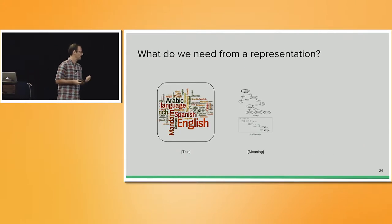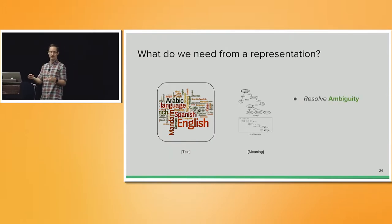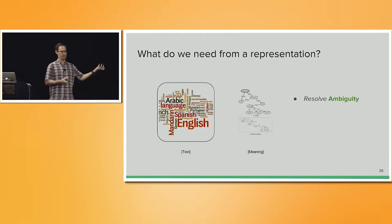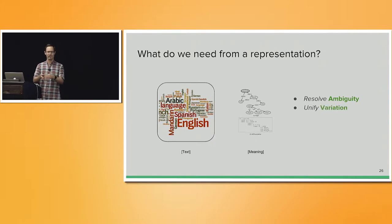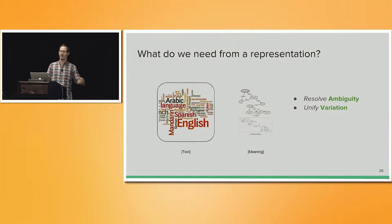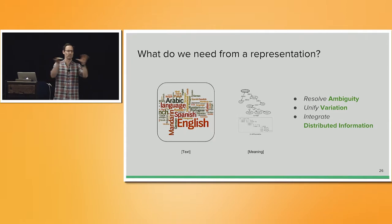Before going into more detail, what do we need from these representations? First, we usually want to resolve the ambiguity inherent in natural language — there are different ways of interpreting the same word in different contexts, and that needs to be represented. Likewise, we want to unify the variation we have in language — often there are many ways to express the same thing, and it's important to unify these and give them a shared common representation. Finally, we want to be able to integrate distributed information — if you have several documents, you'd like to integrate information from them into one unified representation.